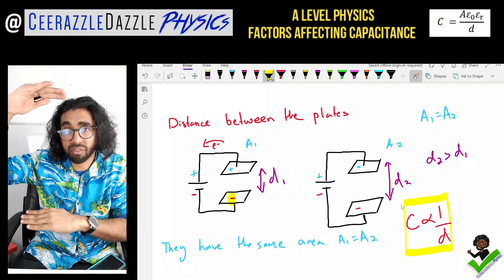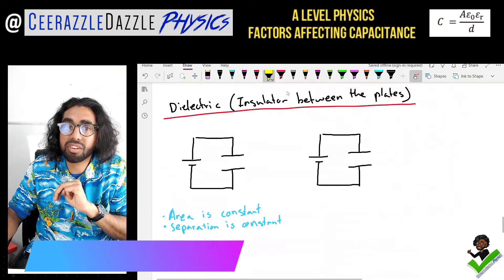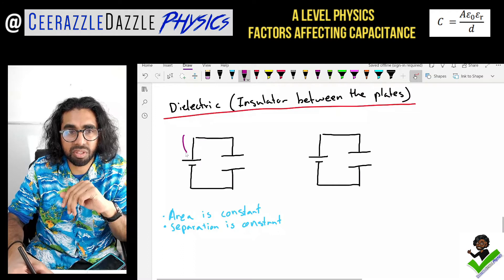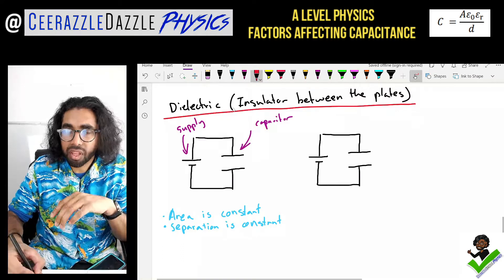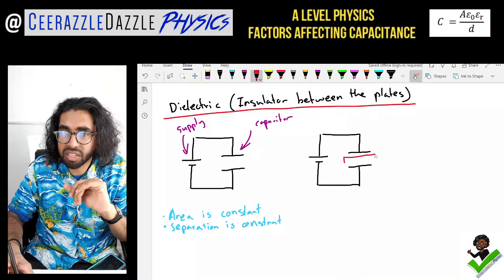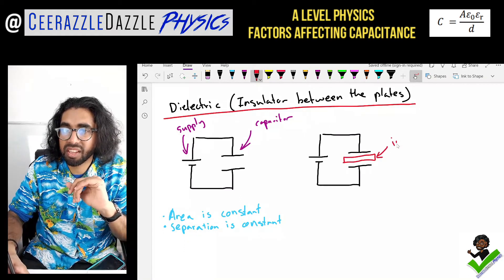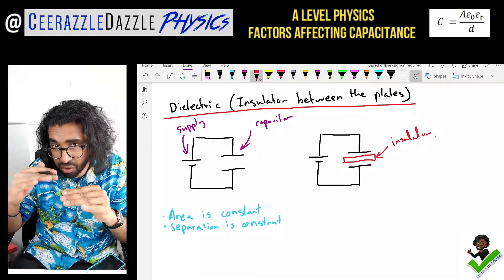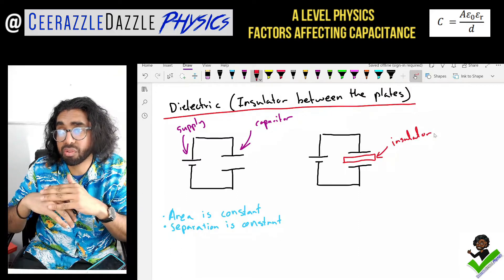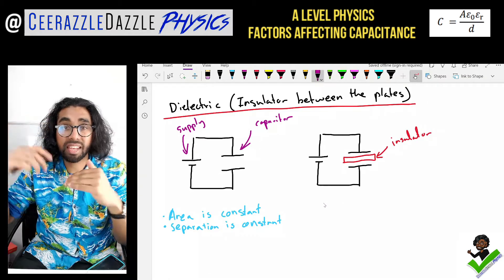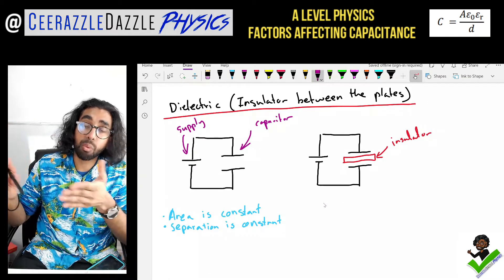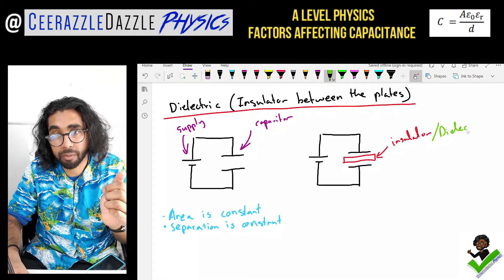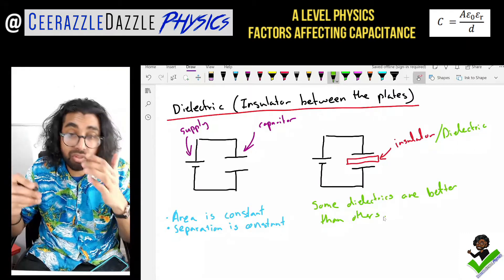The third factor is going to be the dielectric, or the insulator between the plates. I'll simplify the diagram — this is still the power supply, and this is the capacitor. The dielectric is simply this: if I put an insulating material between the plates, does that help the capacitor store more charge or less? By having insulating material between the two plates, it enables the capacitor to store more charge. This insulating material is called a dielectric.